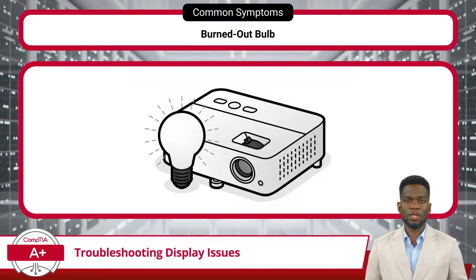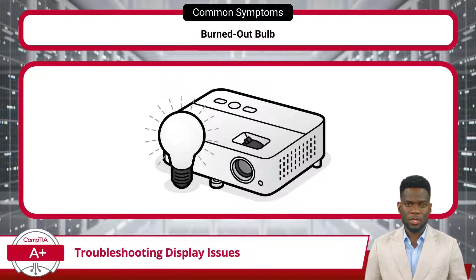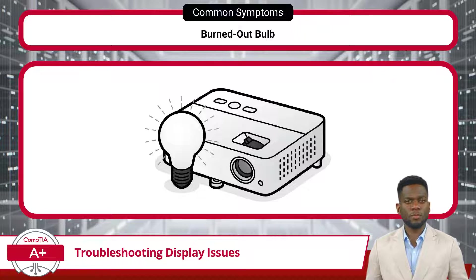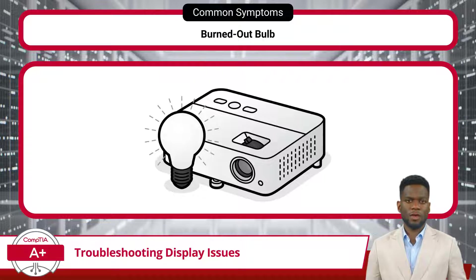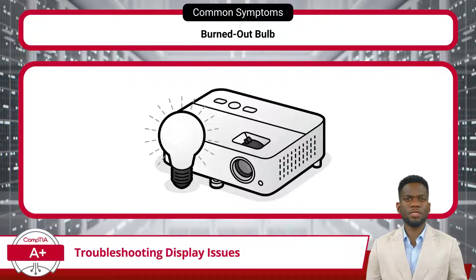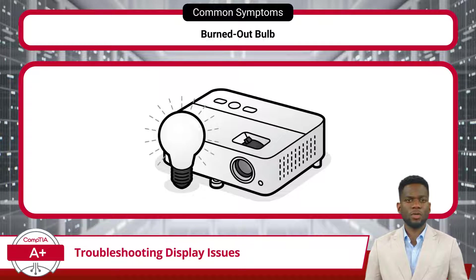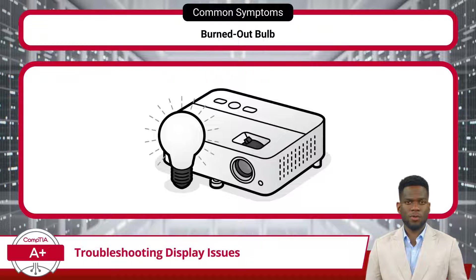Another issue you might encounter with a projector is a burned-out bulb, characterized by no image being projected. The projector bulb, like any other light source, deteriorates over time, leading to diminished brightness and eventually failure. To resolve this issue, users should replace the projector bulb following the manufacturer's guidelines.